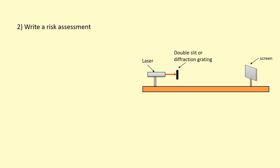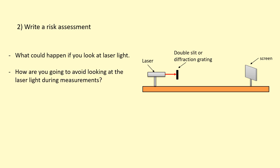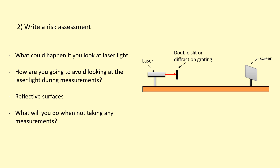You need to write a risk assessment before you start the practical. Since you'll be working with lasers, here are some things to mention: what could happen if you look at the laser light or even a reflection of it, because that's still dangerous. Mention how you're going to avoid looking at the laser — for example, when taking a measurement at the screen, will you always face the screen rather than turning towards the laser? Also mention how you'll avoid reflective surfaces near the screen, and what you'll do when you're not taking measurements — whether you'll leave the laser on or turn it off.